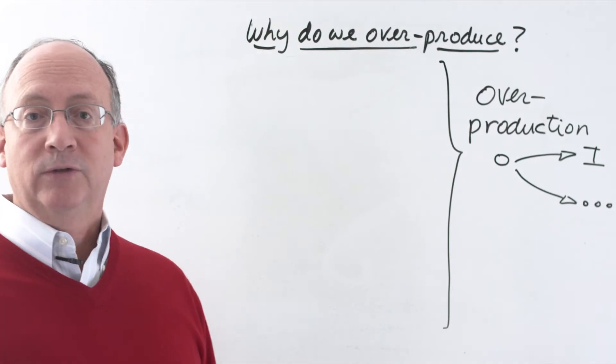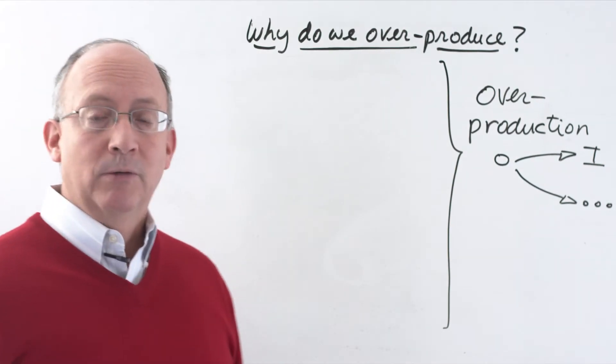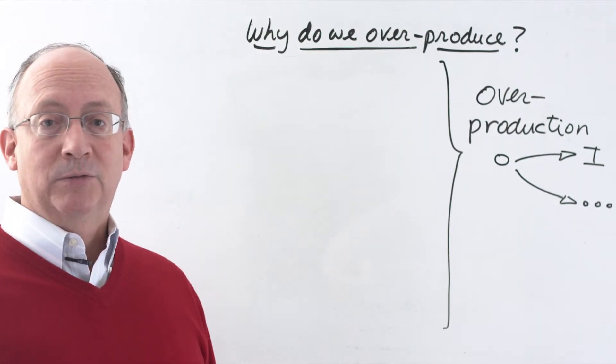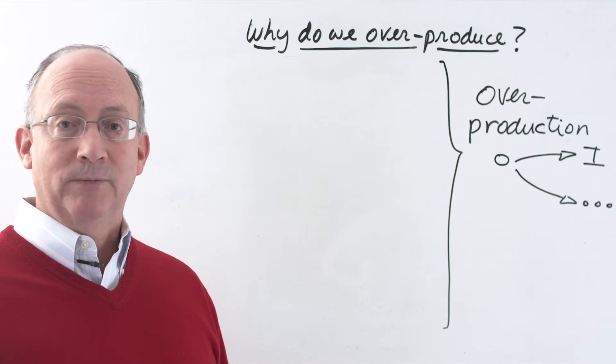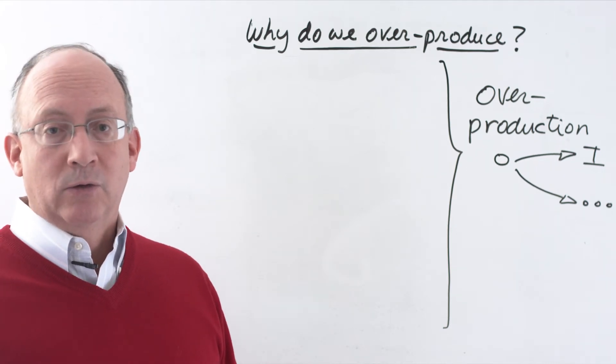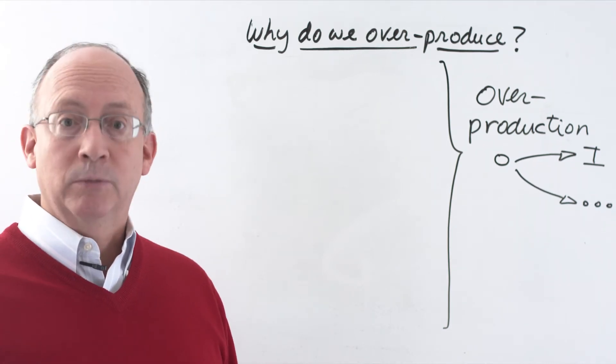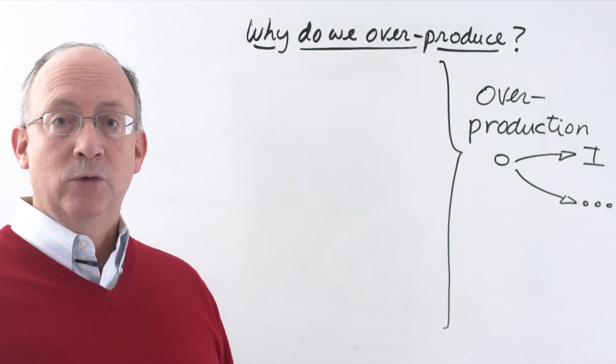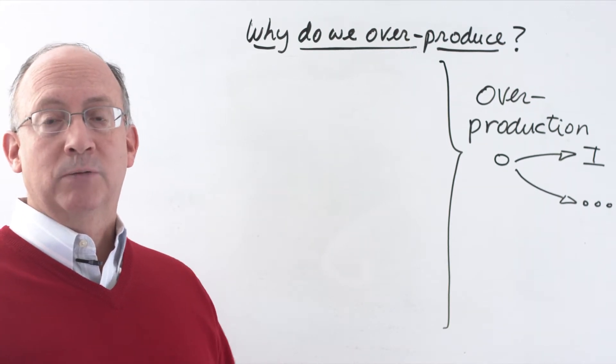Now we're going to explore the reasons why we overproduce. Overproduction, first of all, we're going to define as making more than what you can sell in the near term, or from an internal point of view, making more than what you can pass on to the next production step.